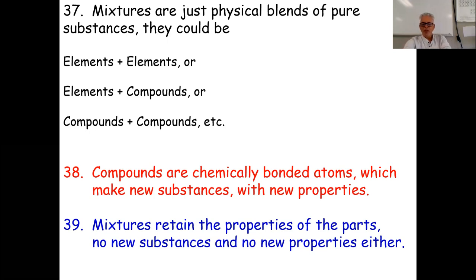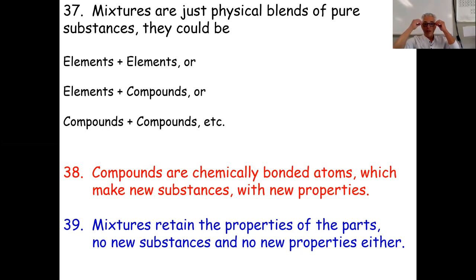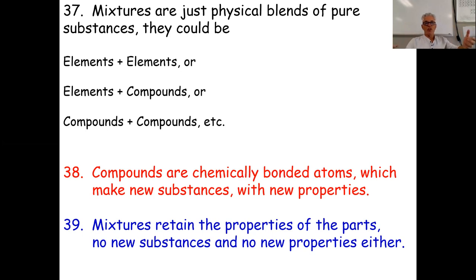Mixtures retain their properties. When you mix helium and methane gas together, some of that mixture is lighter than air and floats to the top, while methane is more at the bottom. In the air in this room, there's oxygen, carbon dioxide, helium, methane, neon, water vapor — all kinds of gases. Each part of the air retains its own properties, and if you physically take them apart, the oxygen could be breathed by animals and the methane could be burned in a Bunsen burner.